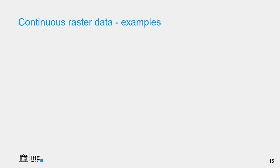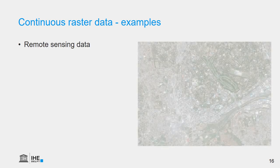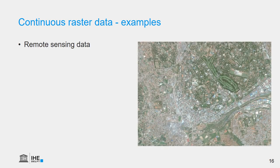Let's further illustrate these different raster data types by looking at examples. Let's first look at continuous raster data examples. Remote sensing data with surface reflection is continuous data, where each cell represents the reflection of the Earth's surface — in this case, the city of Kampala in Uganda.